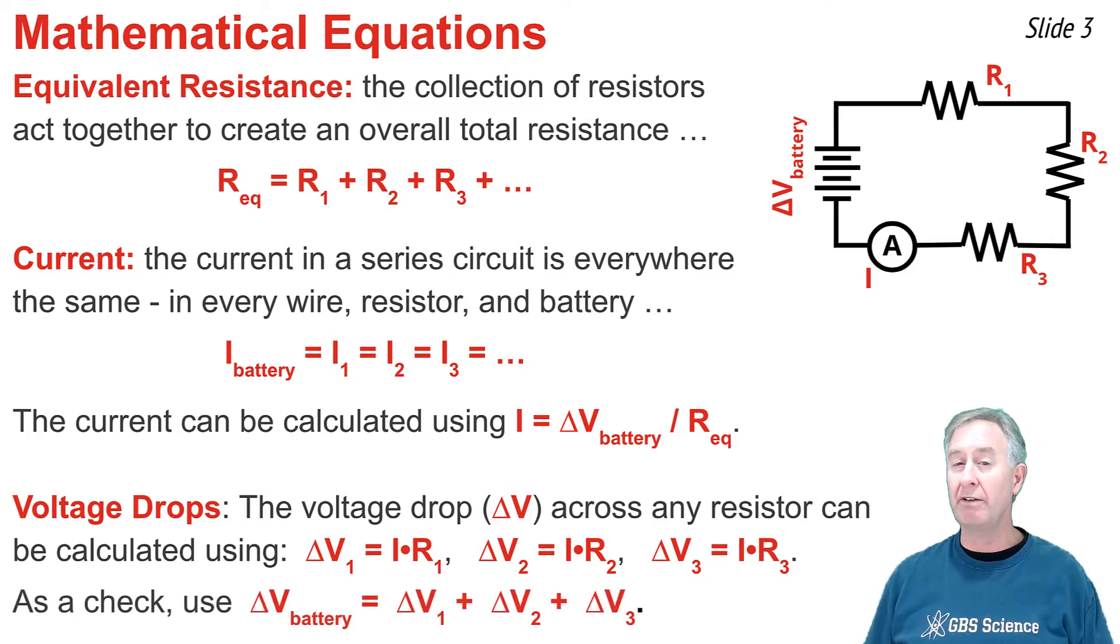As a check, we know that the sum of all of these voltage drops for the individual resistors must add up to the battery voltage.